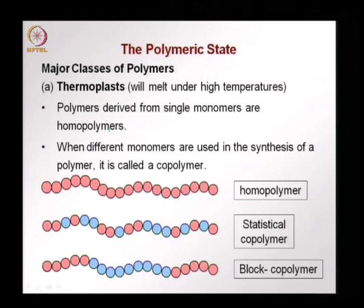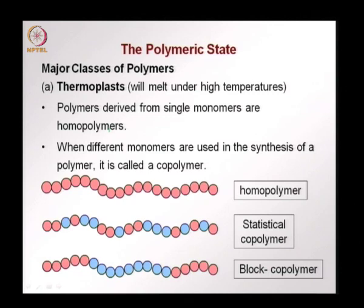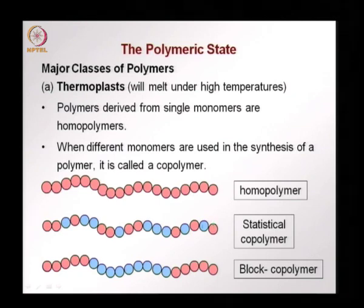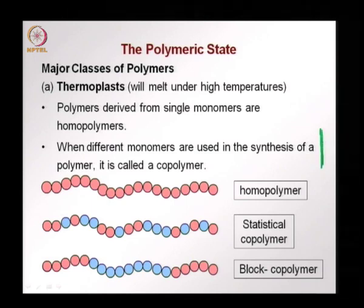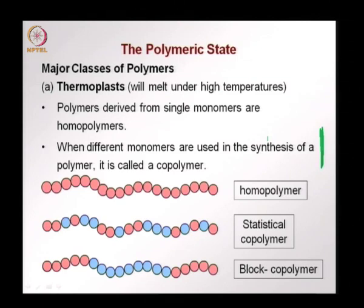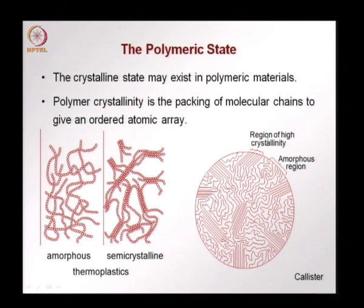Two major classes of polymers can be made depending on how they function under high temperatures. The first is thermoplasts. Thermoplast polymers are homopolymers where we have the same type of monomers in the chain, or there could be a mix called a co-polymer — either a statistical co-polymer with a random mix of two polymers, or a block polymer where one part of the chain is one polymer and another part is another polymer. Thermoplasts means the polymer will melt under high temperature and when cooled will go back to a solid state.